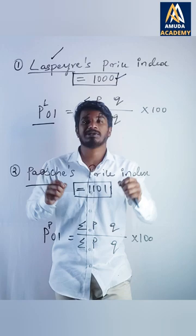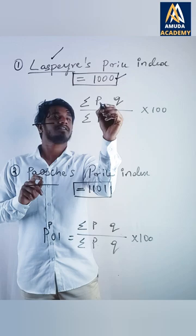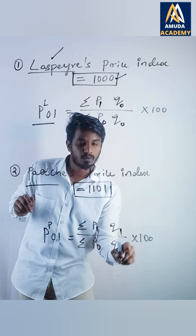Write p₀₁ = Σpq / Σpq × 100 for both of them. Then write the numbers: 1000 for Laspeyre's pairs and 1101 for Paasche's.